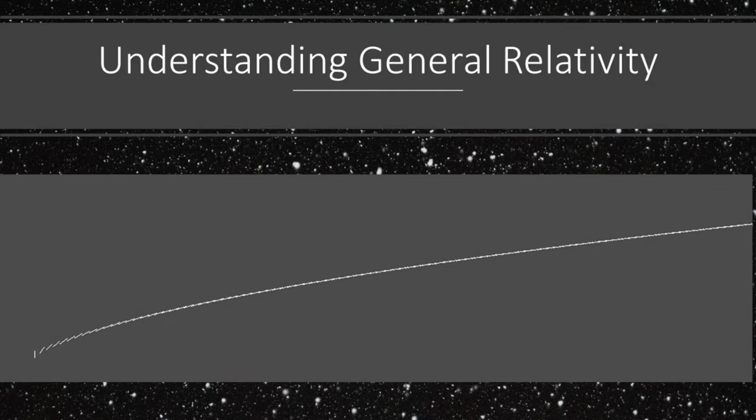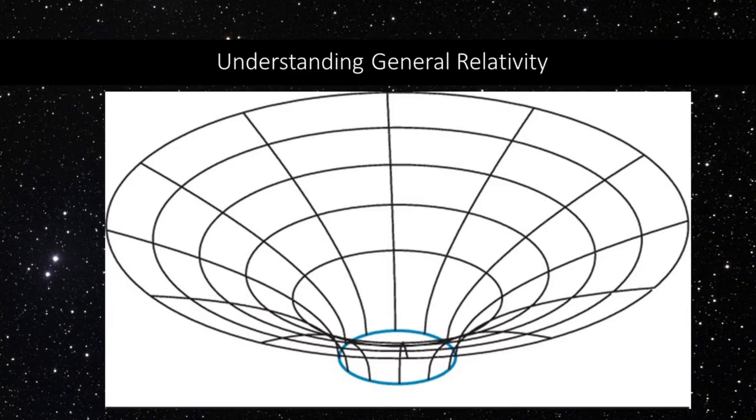Here we have a 2D illustration of a gravitational field under general relativity. It shows the curvature of space that occurs. Note how it also reaches the vertical.